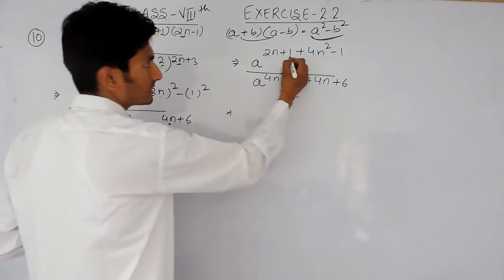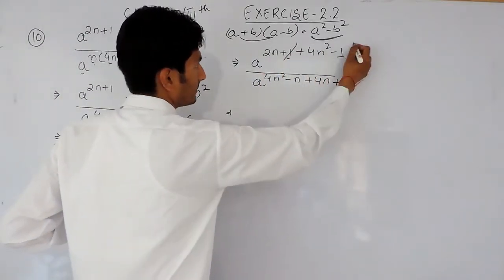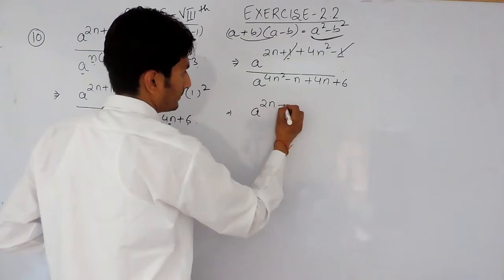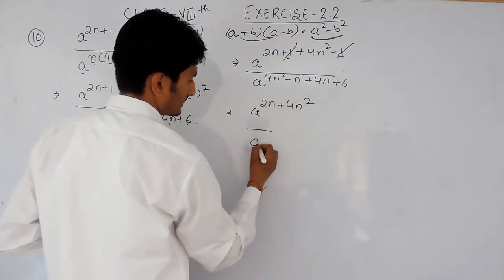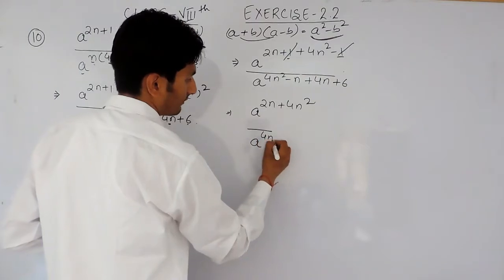Now, further solving this, this and this plus minus n can be cancelled, so this will be a 2n plus 4n square. And in the denominator, this is a, 4n square will remain as it is.